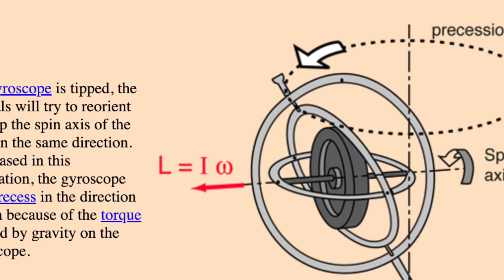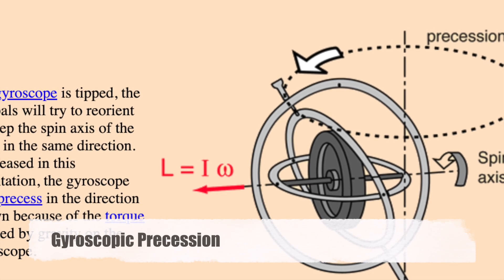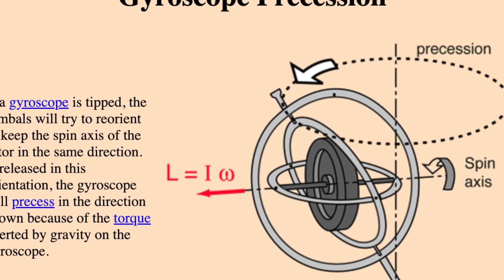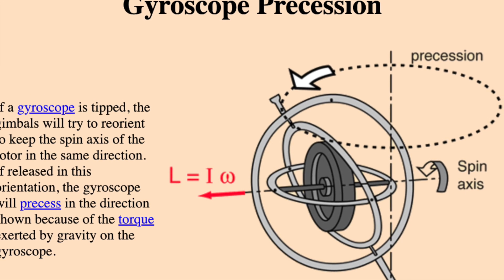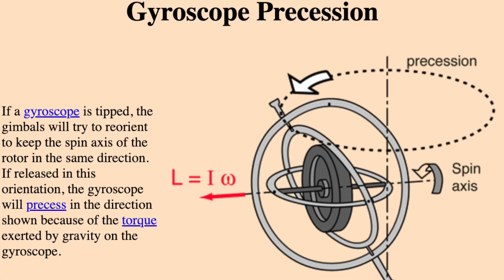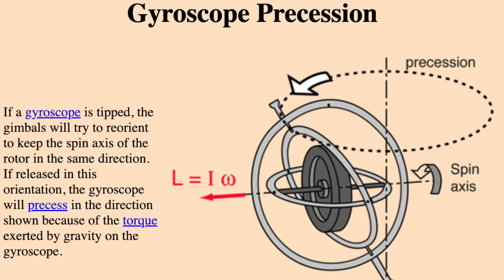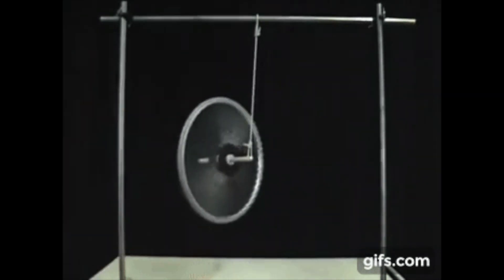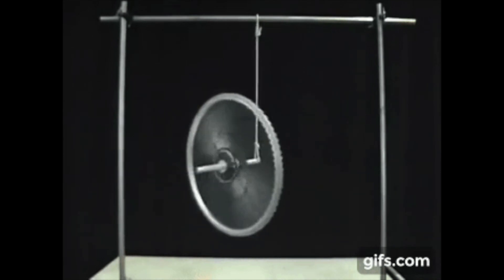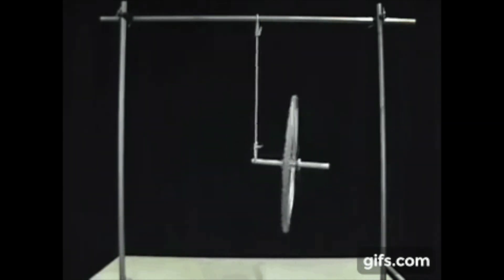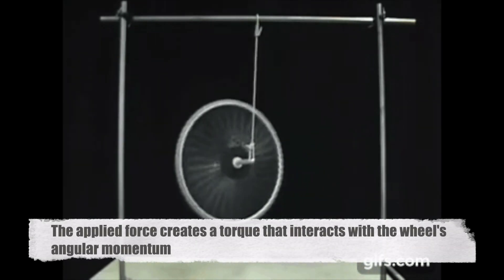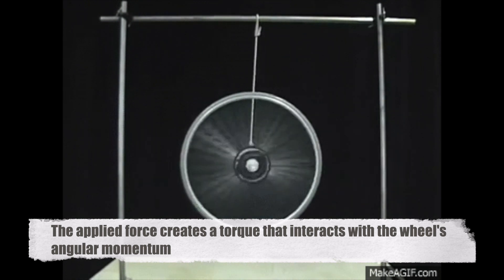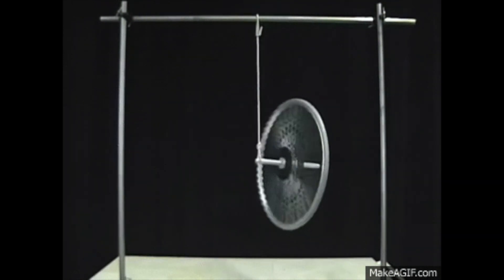Another critical concept to grasp is gyroscopic precession. Precession is the phenomenon where the axis of a spinning object, such as a gyroscope, will move in a circular motion when a torque is applied perpendicular to its axis. This is best demonstrated with a bicycle wheel. When you hold the axle of a spinning bicycle wheel and apply a force, instead of tipping over as you might expect, the wheel's axis will start to precess, moving in a circle. This is because the applied force creates a torque that interacts with the wheel's angular momentum, causing the gyroscope to respond in a perpendicular direction to the applied force.